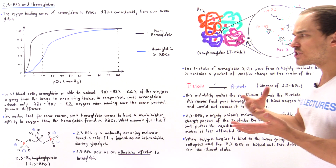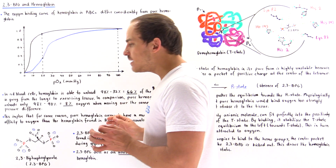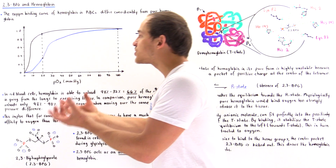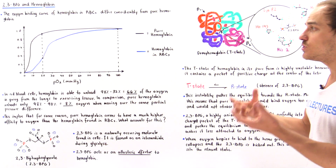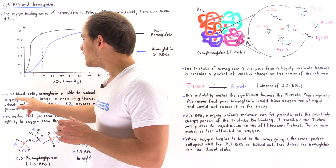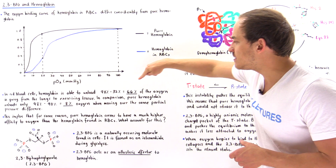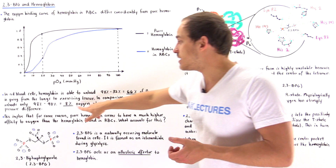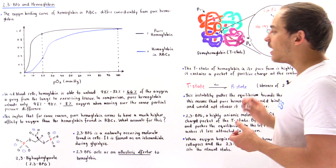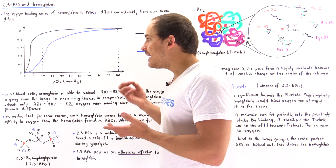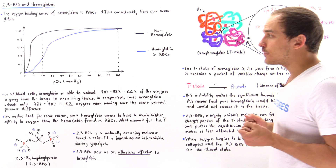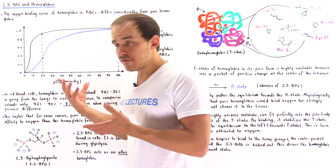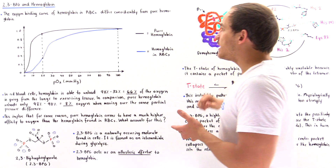This is a big difference. For some reason, when hemoglobin is present inside red blood cells, its affinity for oxygen decreases. That is precisely what allows hemoglobin to unload so much oxygen to the cells of the exercising area. In red blood cells, hemoglobin unloads 66% of the oxygen going from the lungs to the exercising tissue, while pure hemoglobin only unloads 8%. The question is: why is the affinity of hemoglobin for oxygen so much lower inside red blood cells?